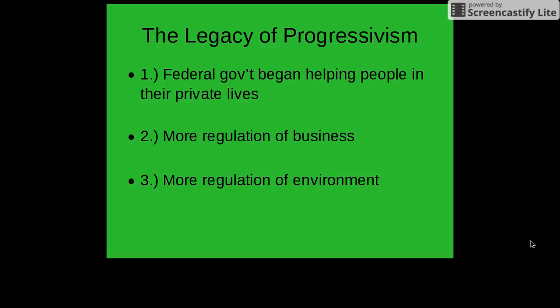The legacy of progressivism is that the federal government began helping people in their private lives, as seen in the laws passed to look out for the common man and to place controls on large corporations. There was also more regulation of the environment, as exemplified by Teddy Roosevelt's dedication to closing off and preserving land within the United States.